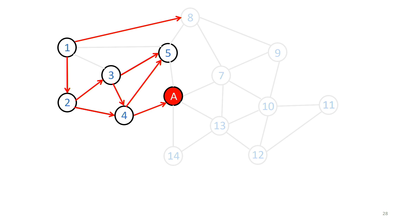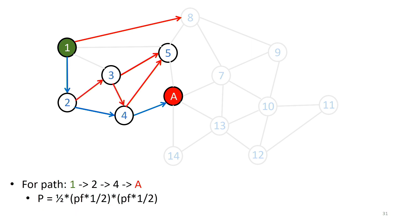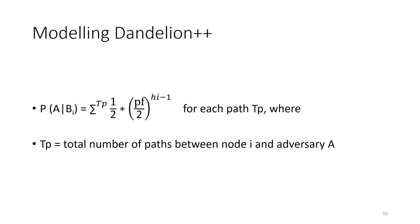For Dandelion++, node 1 selects with probability 1/2 to transfer to either node 2 or node 8. It then forwards to node 4 with probability PF/2 — PF for forwarding, then selecting among nodes 3 and 4 with probability 1/2. Similarly, we consider all paths including path 1-2-3-4 and 1-2-3-4-8. To generalize: PA given BI is calculated by multiplying 1/2 for the first hop and then PF/2 for HI minus 1 hops, where HI is the total number of hops to the adversary, summed over all possible paths.